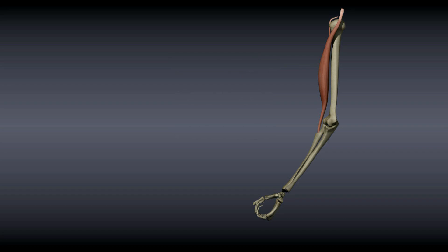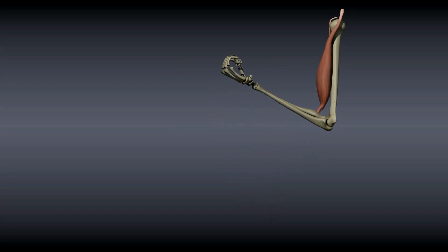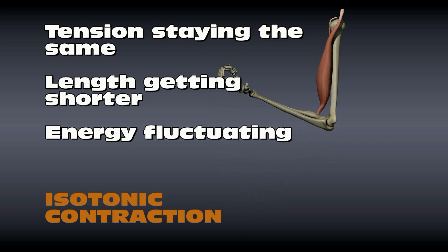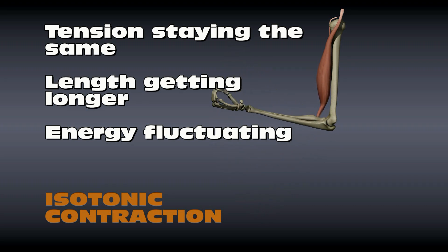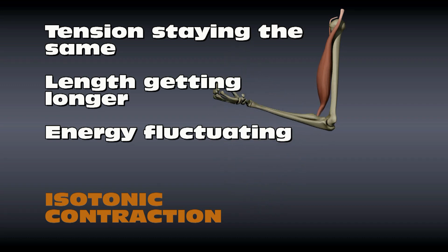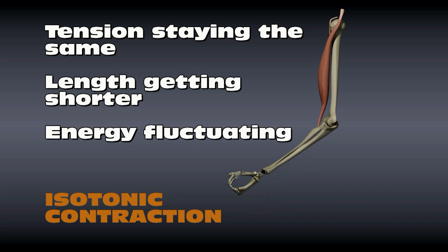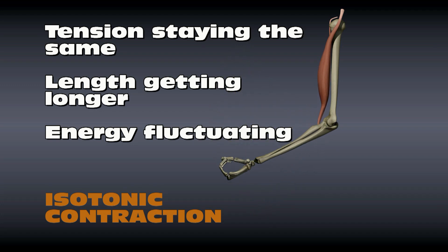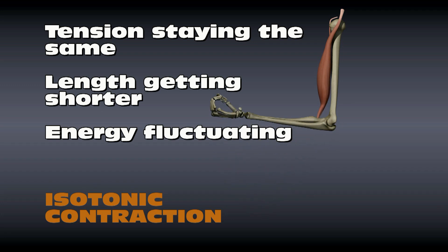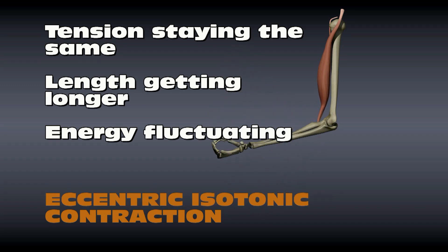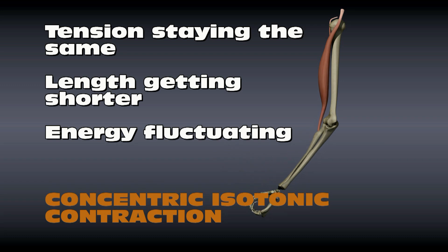In isotonic contractions, the muscle tension stays the same. The length of the muscle changes as the muscle contracts and pulls on the bone. The amount of energy required by the muscle may change, but the tension across the muscle stays the same. If the force the muscle is producing is greater than the opposing force, the muscle shortens — this is called a concentric contraction.